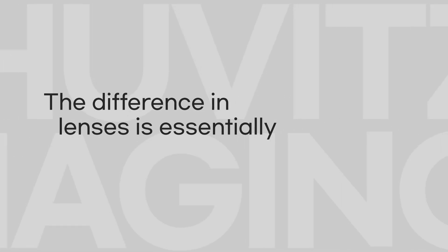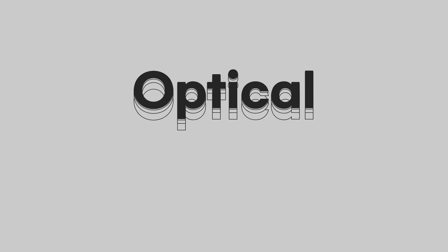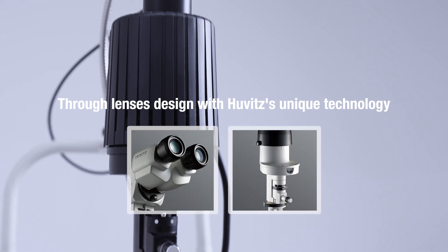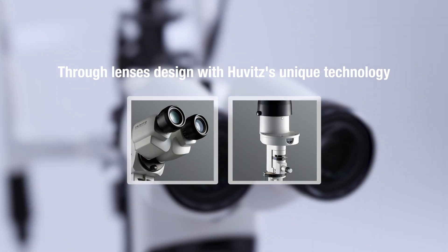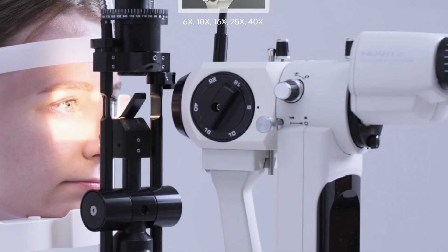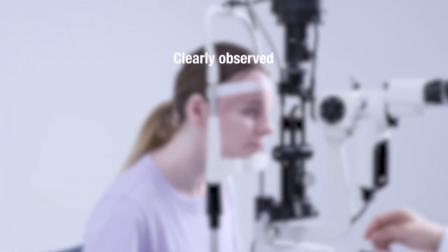The difference in lenses is essentially the difference in quality. Huvitz slit lamp, through lenses designed with Huvitz's unique technology, even with quick magnification changes, clear observation is possible without loss of image quality.